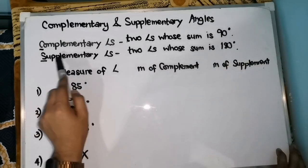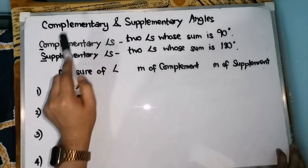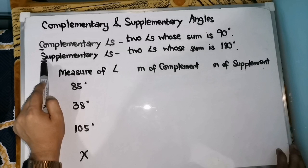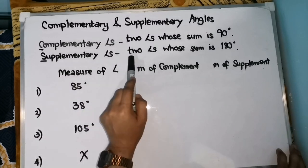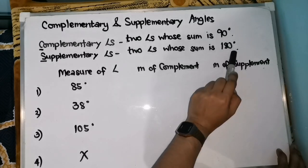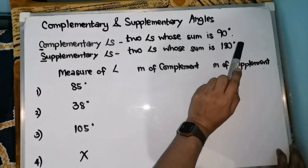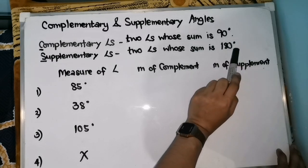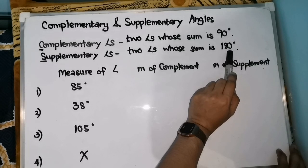While supplementary angles — its initial letter is 'S', which stands for 'straight', and a straight angle measures exactly 180 degrees. Thus, two angles whose sum is 180 degrees. When you say supplementary angles, two angles that when added together, the sum or result should be equal to 180 degrees.